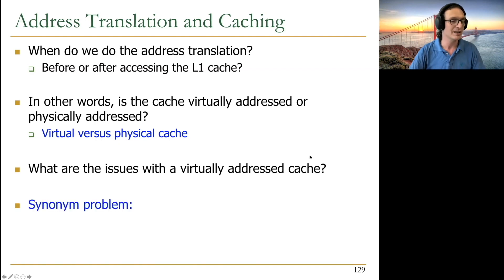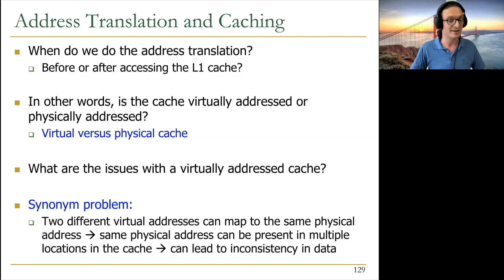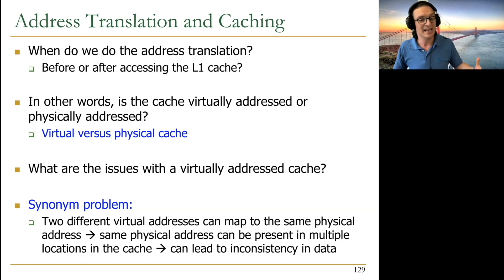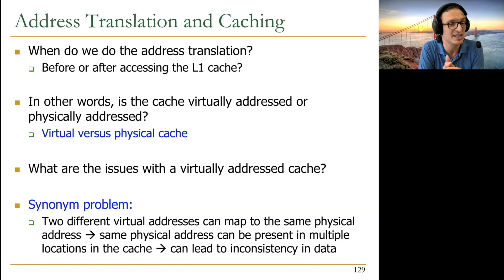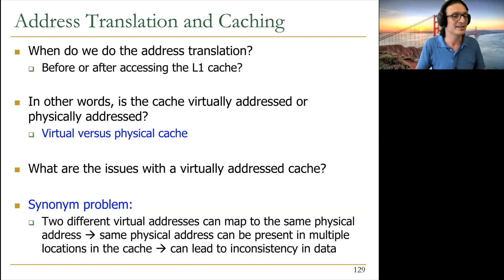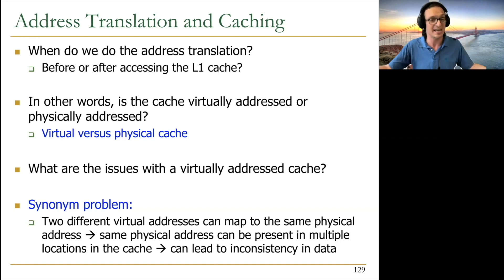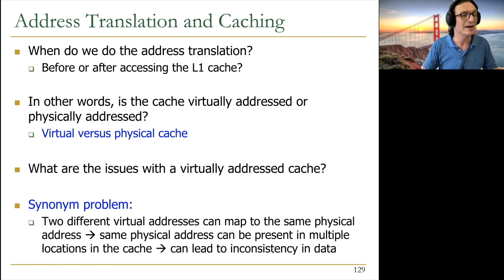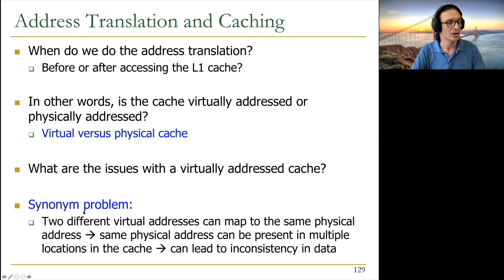One issue with a virtually addressed cache is the synonym problem: two different virtual addresses from the same or different processes can map to the same physical address. This means the same physical address can be present in multiple cache locations, leading to inconsistency — if one copy is updated, the other must be updated or invalidated. This is a coherence problem inside your own cache.